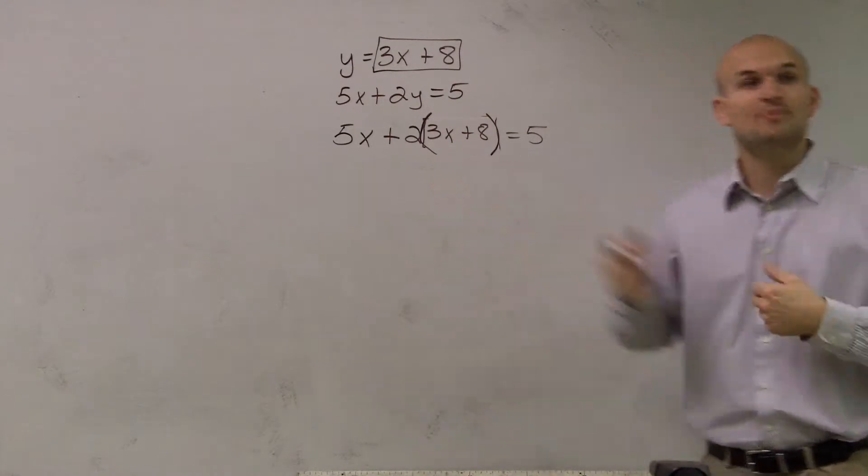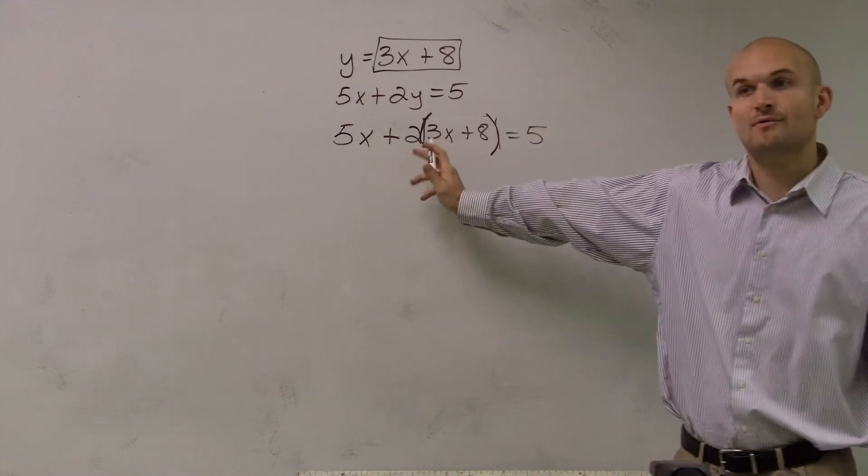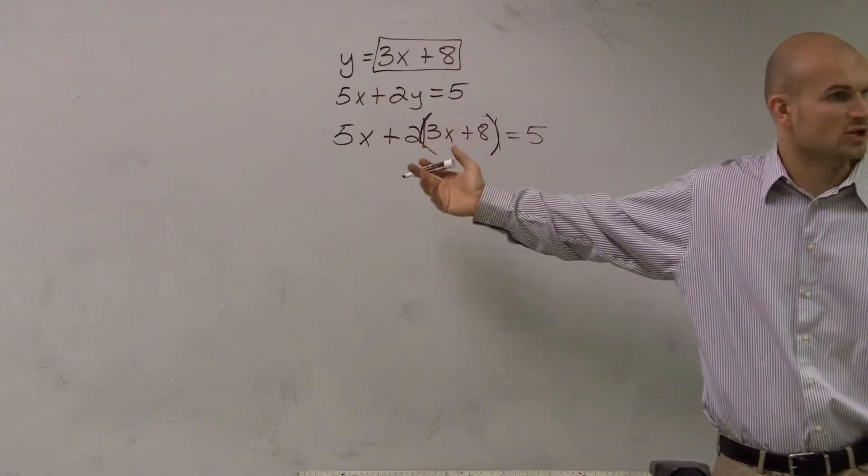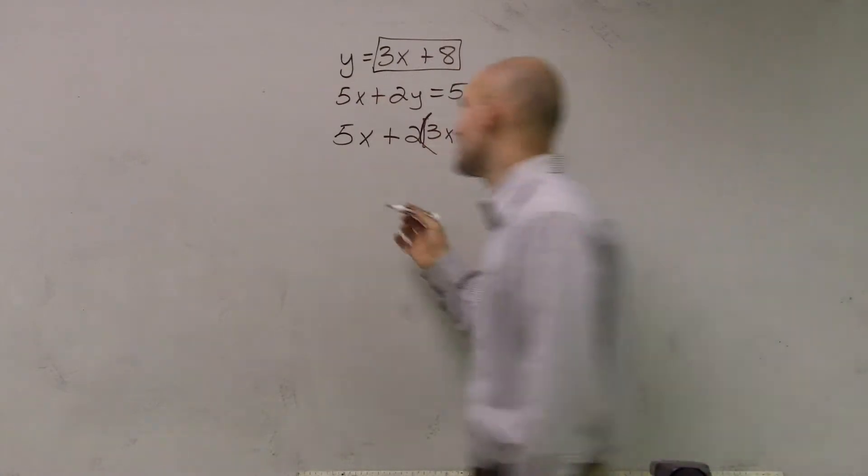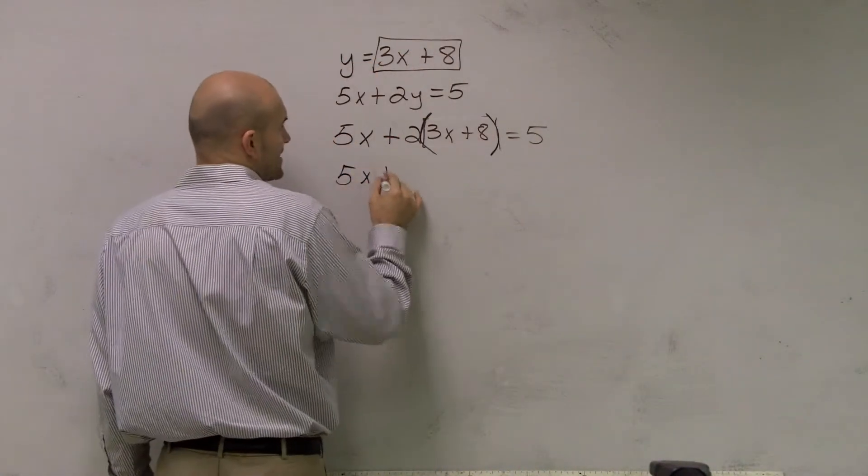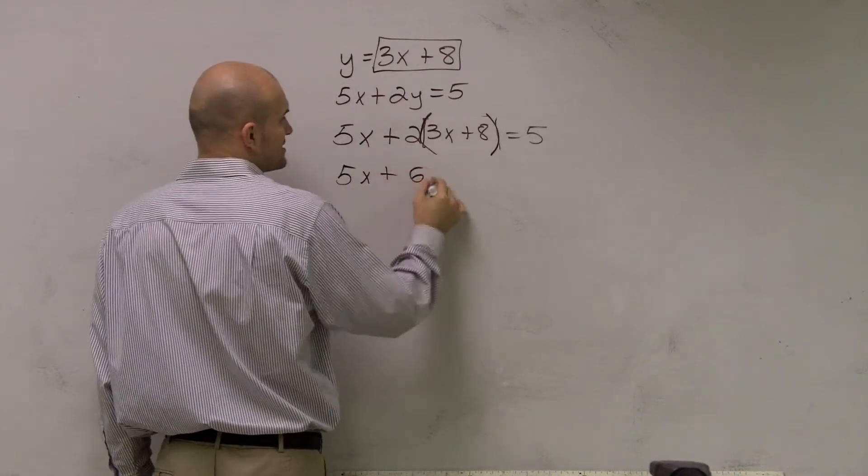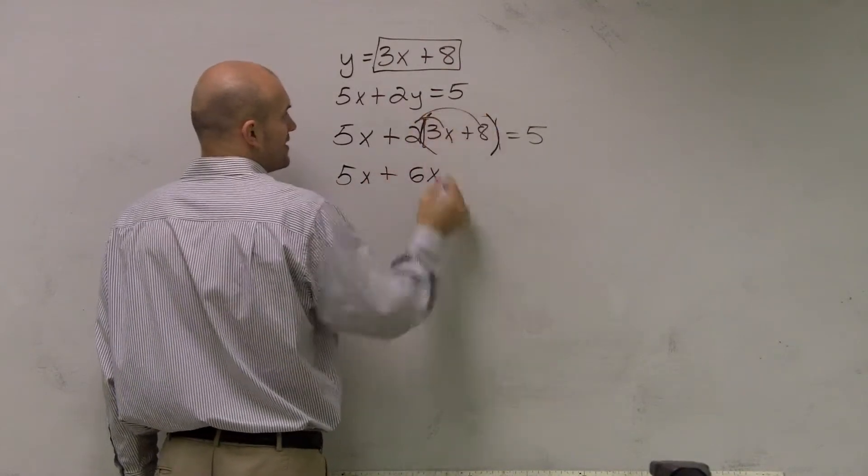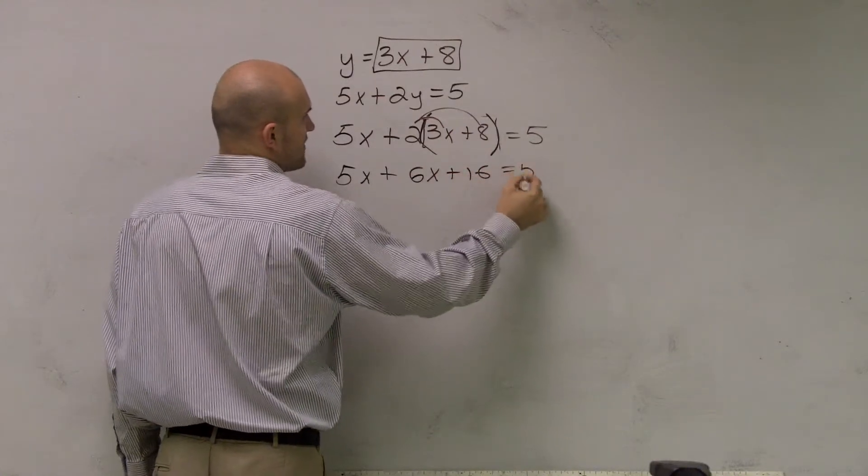Well, now, I need to simplify. So remember, whenever you have a parentheses and a number is right next to it, meaning multiplication, we need to do a distributive property. 5x plus 2 times 3x is 6x. And then 2 times 8 is going to be a positive 16 equals 5.